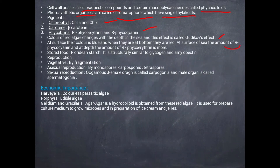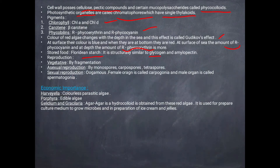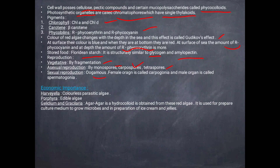At the surface, if red algae appear blue, R-phycocyanin is more. At depth, if red algae appear red, R-phycoerythrin is more. Stored food is in the form of floridian starch, which is structurally similar to glycogen and amylopectin. Vegetative reproduction is by fragmentation; asexual reproduction is by monospores, carpospores, and tetraspores.